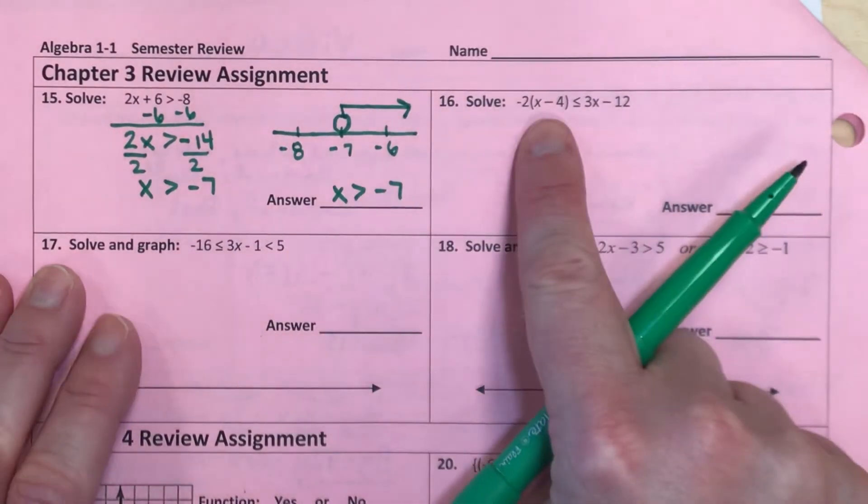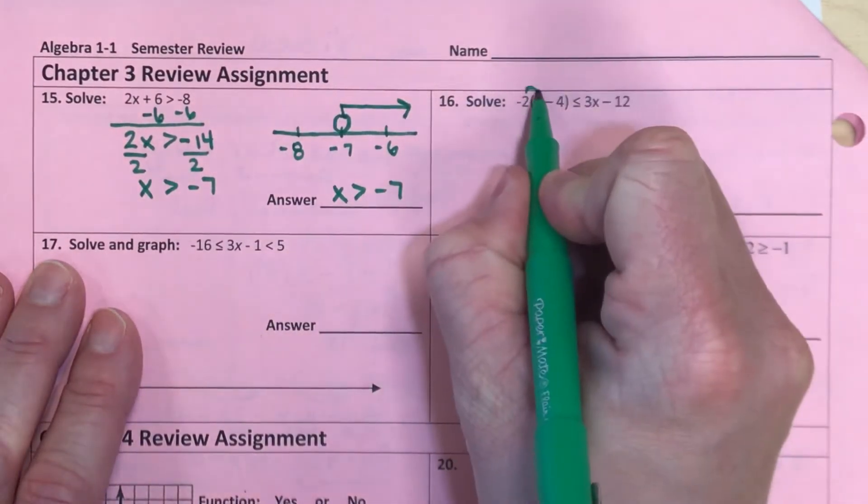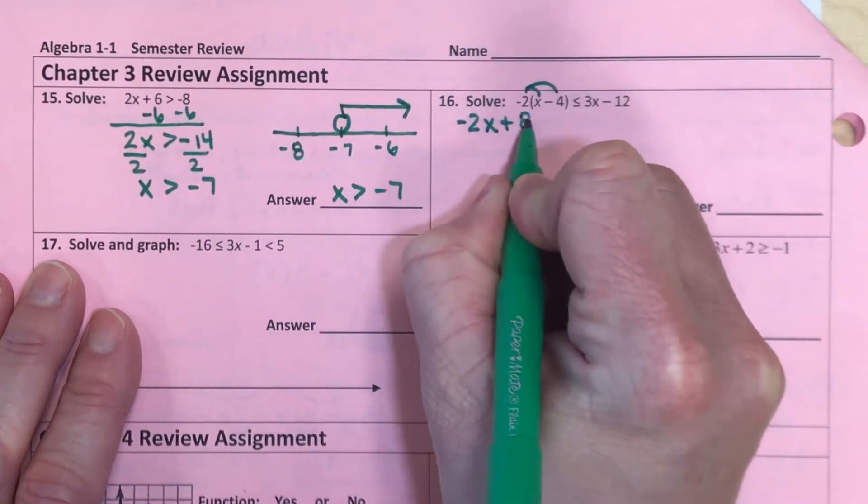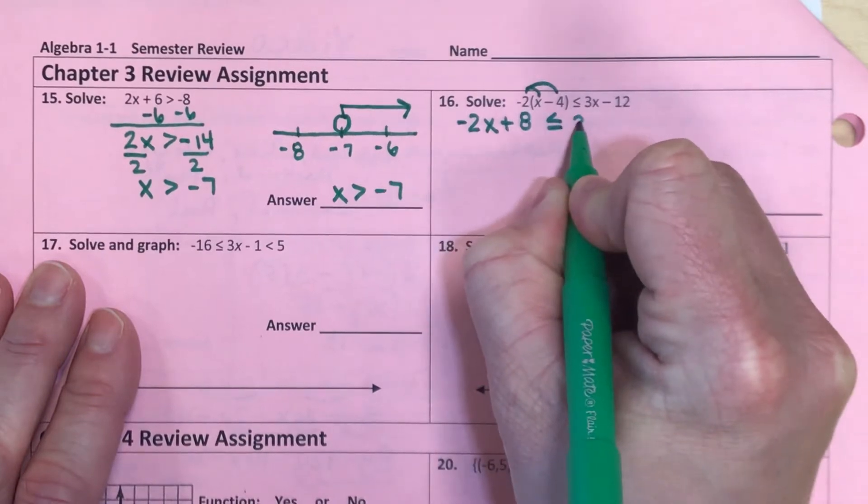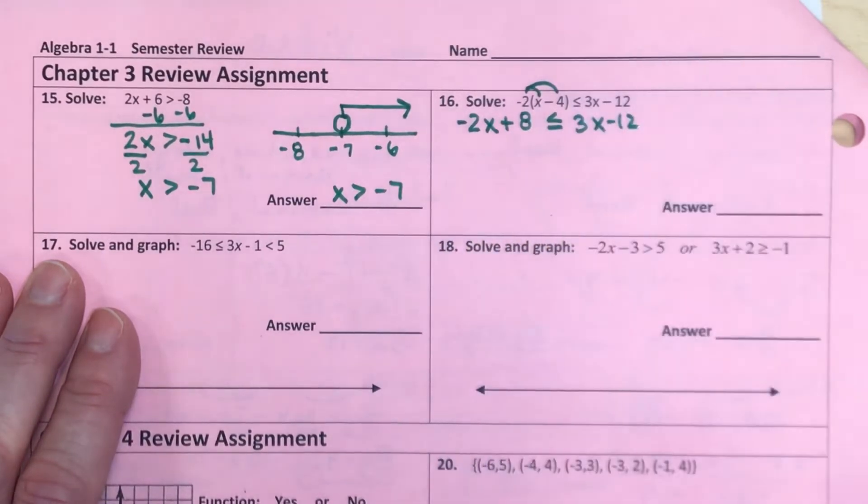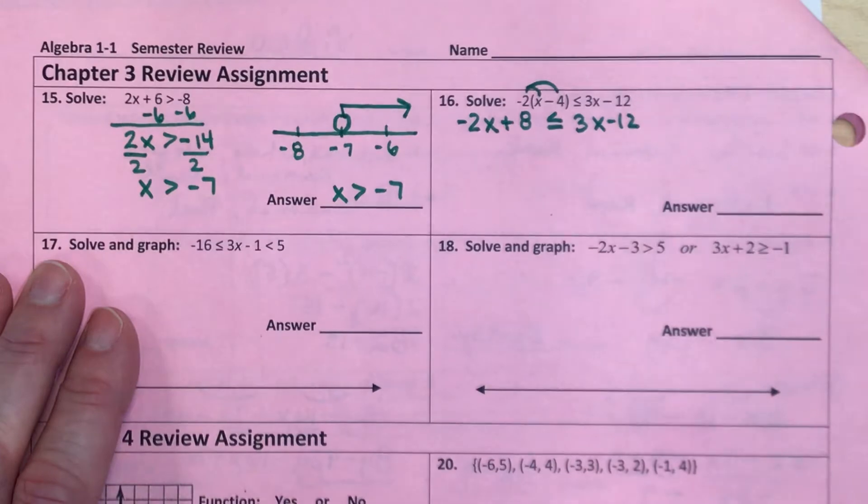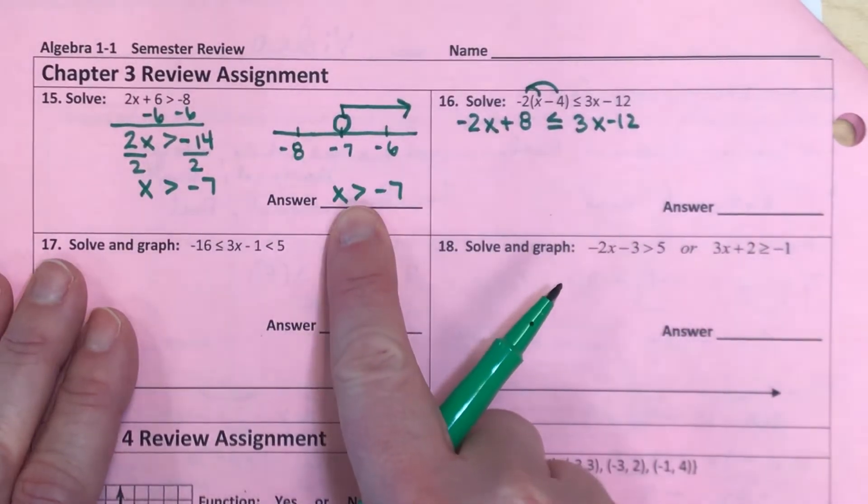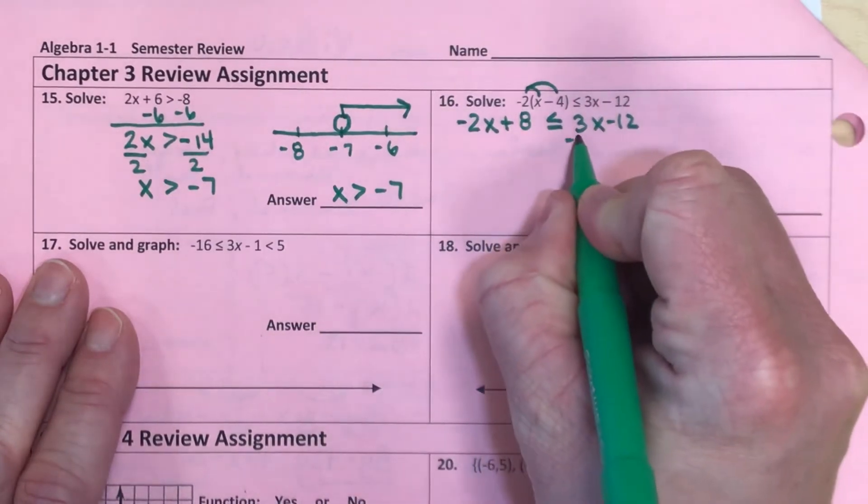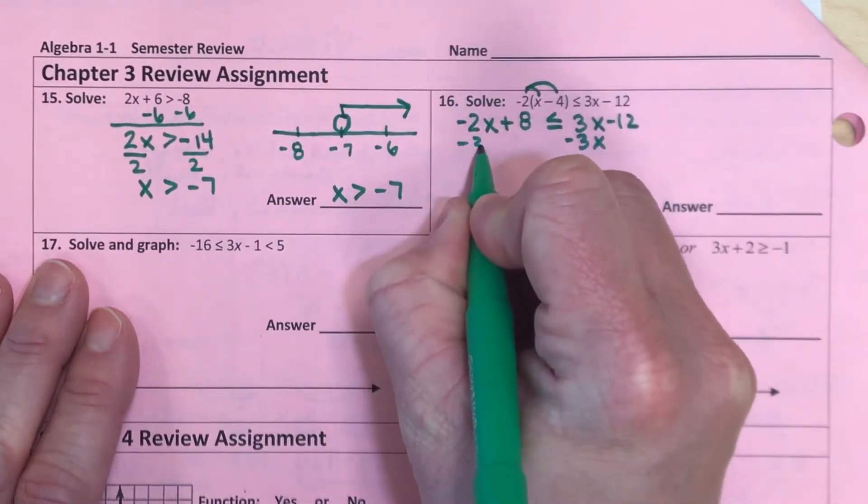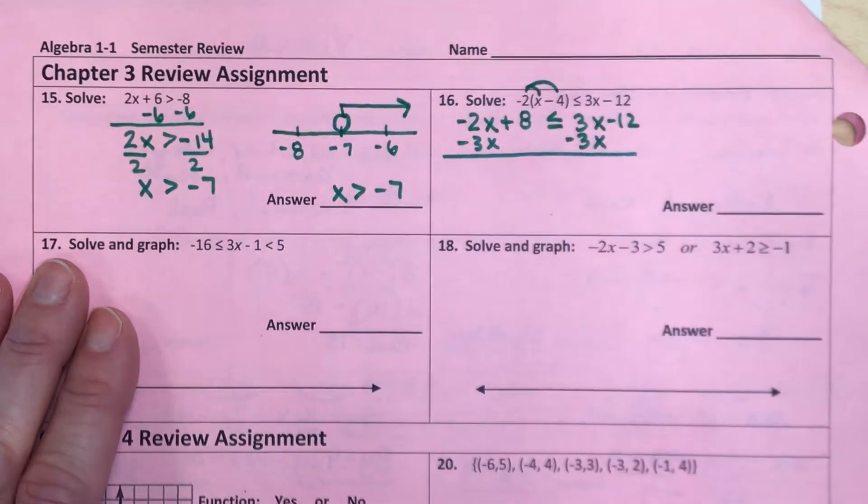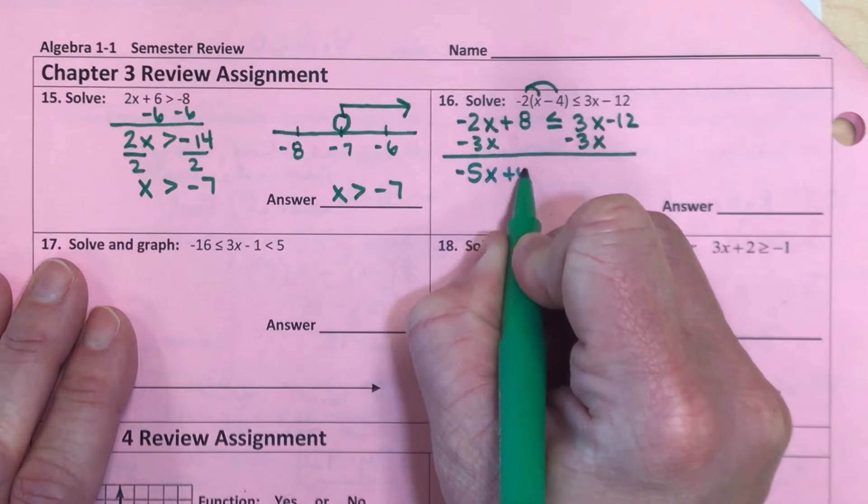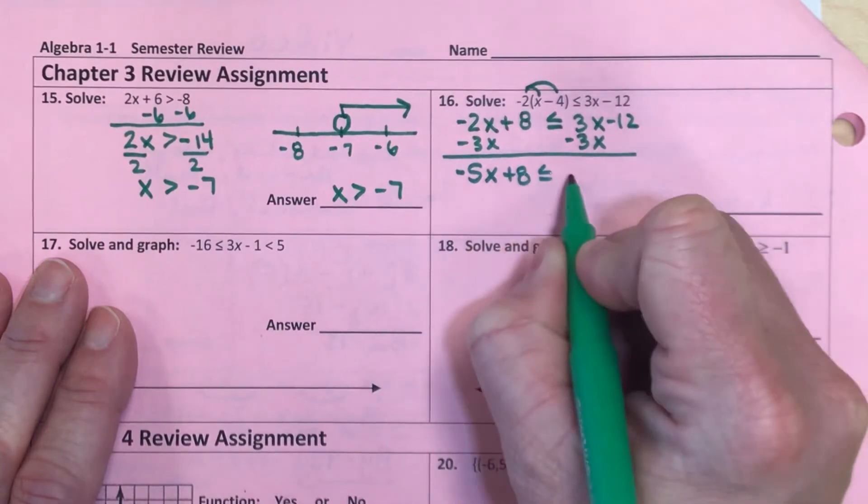For number 16, what we want to do is distribute our negative 2 to the x and to the negative 4. So negative 2x plus 8, and that is less than or equal to 3x minus 12. Now, when I solve for inequalities, I like to have my x on the left side because then my inequality points me in the direction I need to shade. So I'm going to move my x's to the left side. Now, I know I'm going to get a negative, but that's okay. I can deal with that later. So negative 5x plus 8 is less than or equal to negative 12.